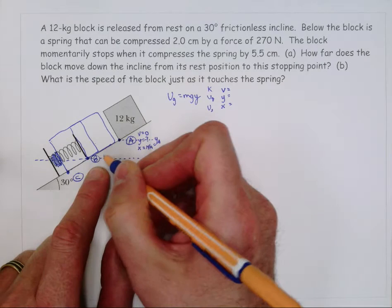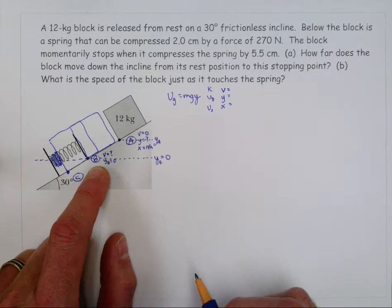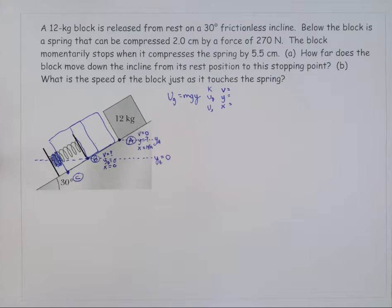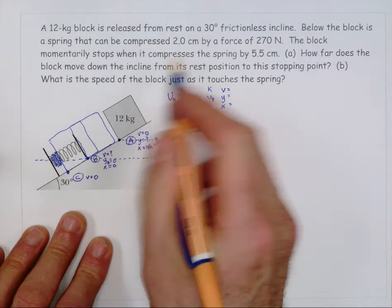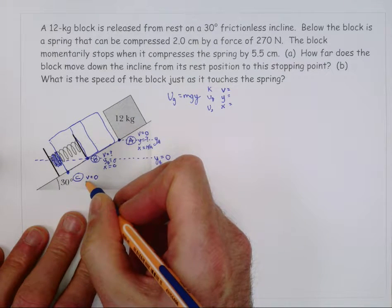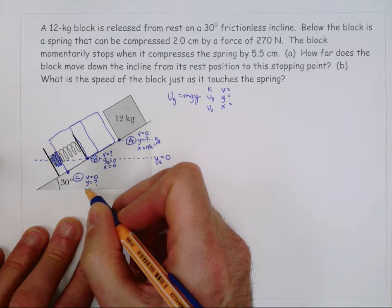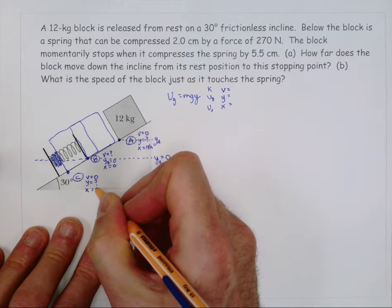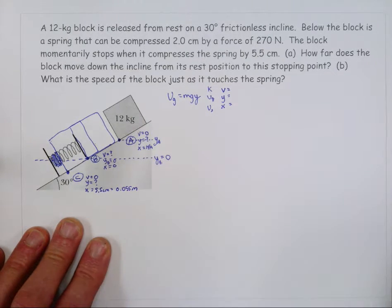At B, we don't know the velocity. The y coordinate at B is zero because that's where we set it. And x is zero — the spring is in its relaxed position. At C, we know the velocity is zero since it momentarily comes to rest. The y coordinate is a question mark for now. The spring compression x is given as 5.5 centimeters, which equals 0.055 meters.